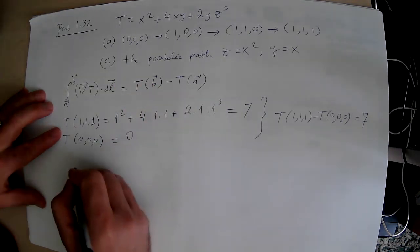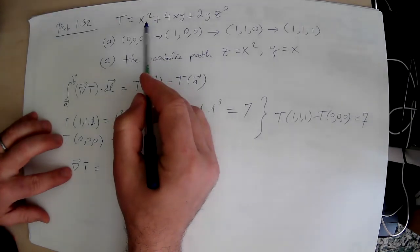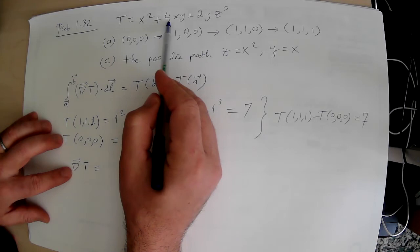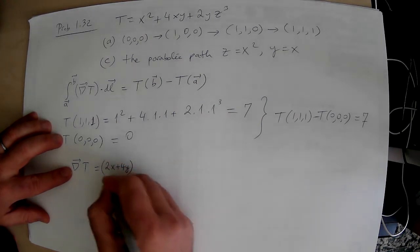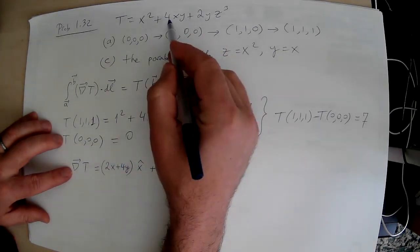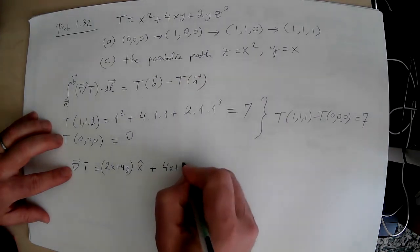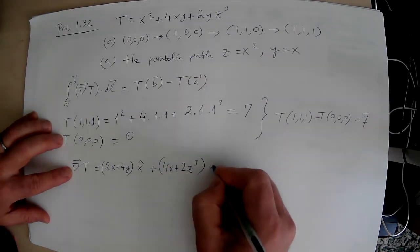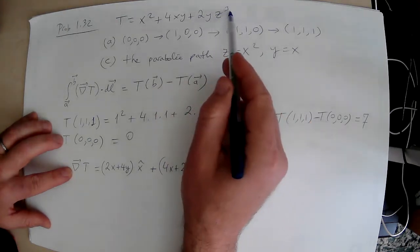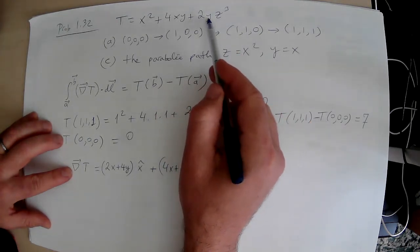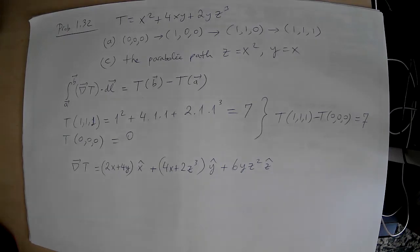So let's do that, gradient of this function T. Well, first I've got to take the derivative with respect to x. That's 2x plus 4y, nothing will come from this. So it's going to be 2x plus 4y x-hat, plus take the derivative with respect to y, nothing comes from this, 4x plus 2z³. And that's the y-hat, y component. And then take the derivative with respect to z, that's only the last term, 3z² times 2y, that's like 6yz². And that's z-hat. So that's my gradient of the function.